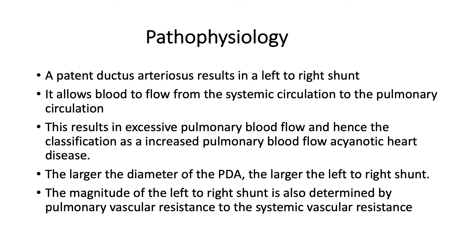Pathophysiology: A patent ductus arteriosus results in a left-to-right shunt. It allows blood to flow from the systemic circulation to the pulmonary circulation, resulting in excessive pulmonary blood flow — hence the classification as an acyanotic increased pulmonary blood flow disease.